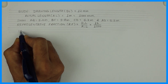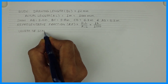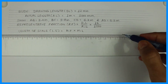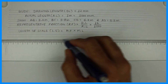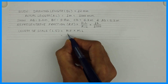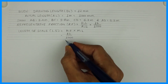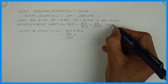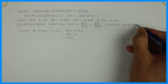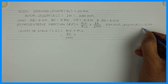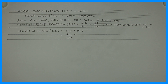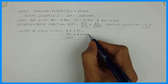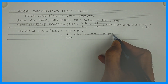The length of scale formula is RF into maximum length. What is the maximum length here? It is not given directly, but we can find it from the given lengths. They have given four lengths: AB, BC, CD, AD. The maximum length is 6.2, so we round it off to 7. Maximum length must always be a round number — it can't be a fraction. So 7 multiplied by 1000mm, doing this in mm, we get 84mm.